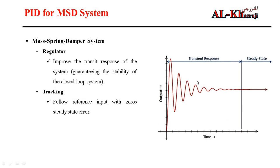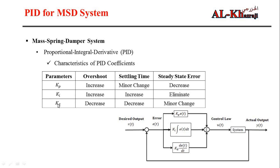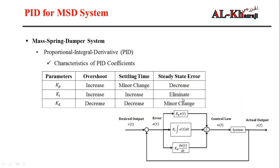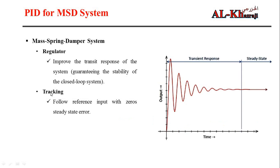Looking at the system response, there are transient response and steady-state components. In control systems, there are two problems: the regulator problem and the tracking problem. In the regulator problem, we improve the transient response and guarantee closed-loop stability — Kd decreases overshoot and settling time, improving transient response. For the tracking problem, we need to follow a reference with zero steady-state error, so we focus on the integral term. For improving transient response, we focus on the derivative term.